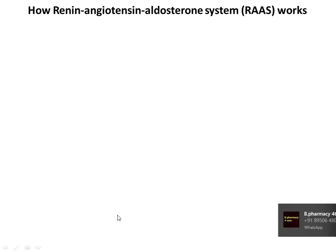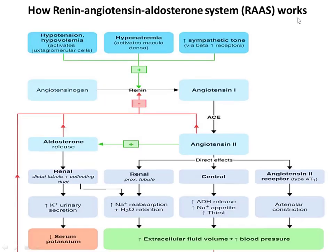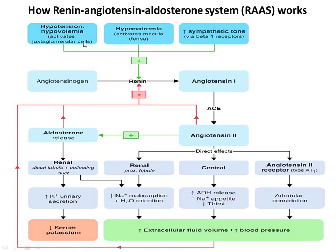Before studying further we should understand how the Renin-Angiotensin-Aldosterone system works. With a drop in blood pressure, there is reduced renal perfusion. If pressure in renal arteries falls more than 10 to 15 mmHg, hypotension and hypovolemia occur which activate juxtaglomerular cells. Hypernatremia activates the macula densa and increases systemic tone via beta-1 receptors, also triggering release of renin. This renin converts angiotensinogen into angiotensin 1, which is then converted into angiotensin 2 with the help of ACE enzyme.